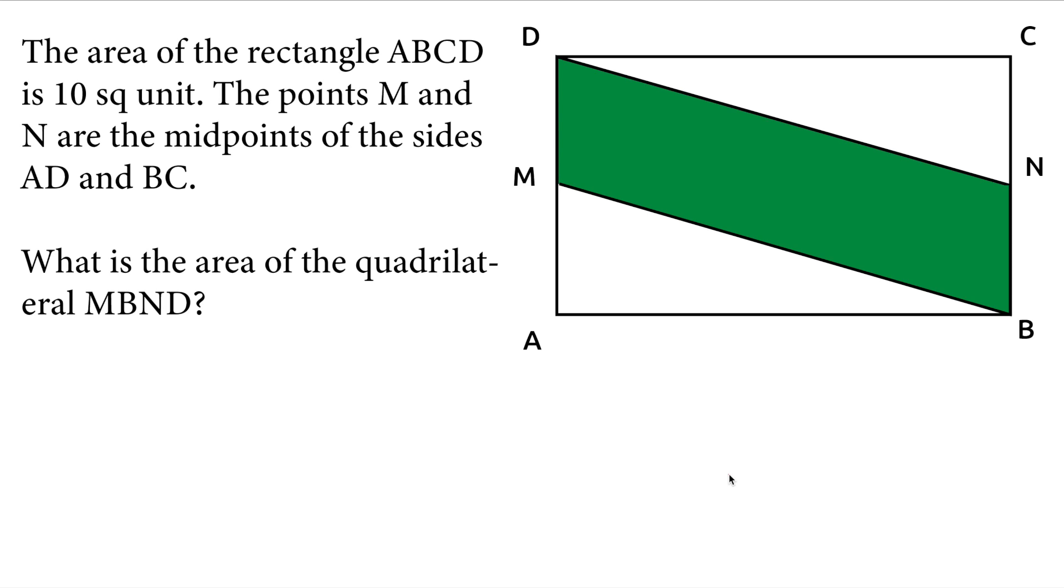The area of the rectangle ABCD is 10 square units. The points M and N are the midpoints of the sides AD and BC. What is the area of the quadrilateral MBND?